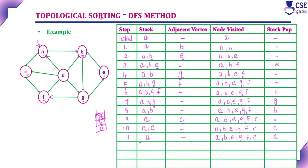Now the stack is empty, but vertex D has not been visited. Take the next unvisited vertex D and push it onto the stack. Consider D's adjacent vertices — all adjacent vertices are already visited, so there is no new adjacent vertex to D. Node visited is A, B, E, G, F, C, and D. D has reached a dead end — pop D from the stack. Now the stack is empty and all vertices have been considered; the DFS procedure is complete.